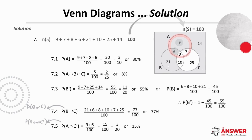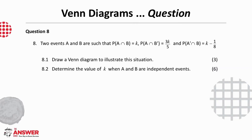This is a great question to help you get really comfortable with navigating around a Venn diagram. Our last Venn diagram question is about two events A and B and includes some algebra — don't let this put you off and make sure to use what you know.